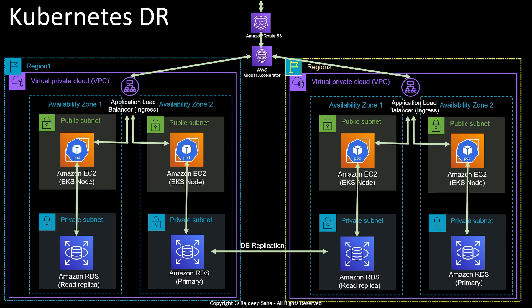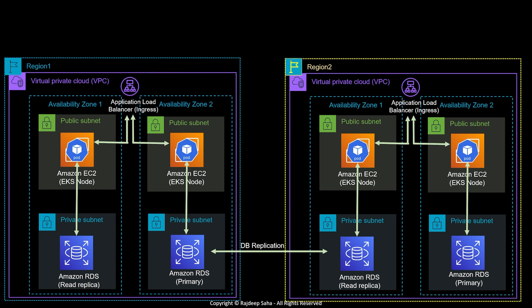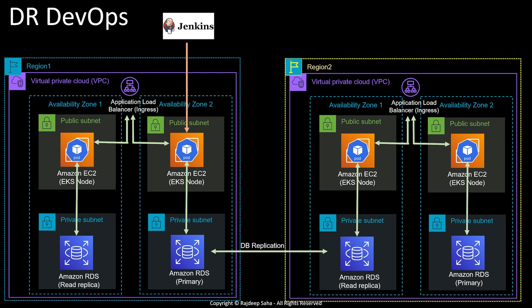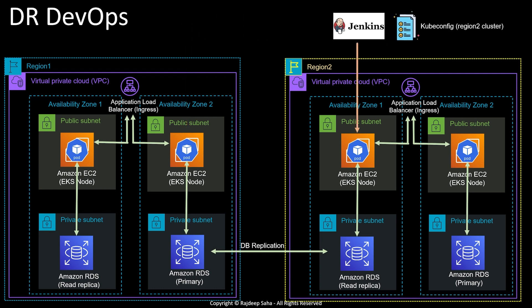There are multiple ways to promote a read replica — study up on that before your interview. For DevOps, let's say you are using Jenkins to deploy the application into region one. Jenkins knows which Kubernetes cluster to deploy to using a file called kubeconfig, which specifies the target cluster. In case of disaster recovery, you can switch this kubeconfig to point to the region two cluster. You can go further with a Route 53 controller that does constant health checks — if health checks fail, you switch the Jenkins job to point to another kubeconfig or run a kubeconfig command pointing to the EKS cluster in region two.